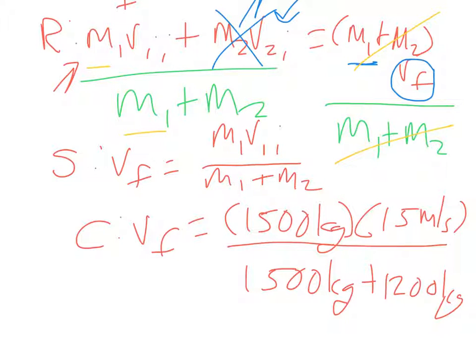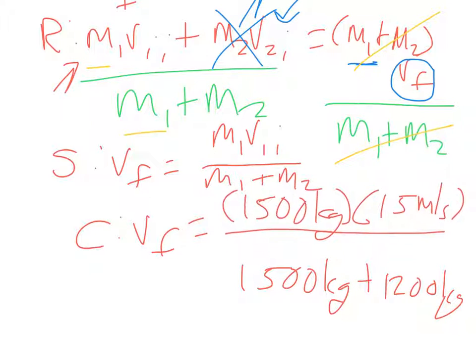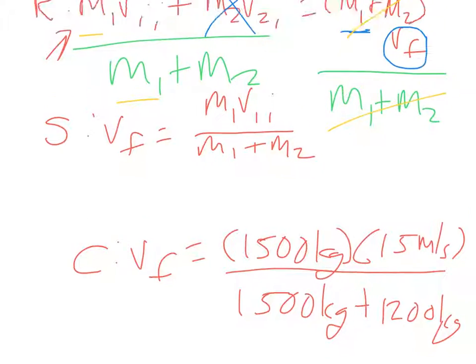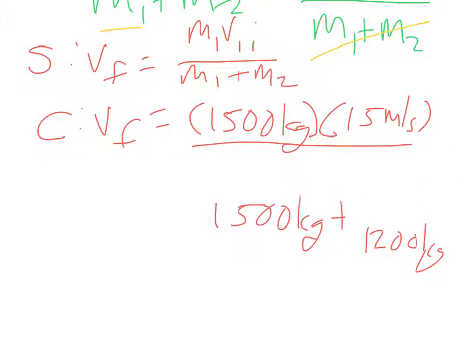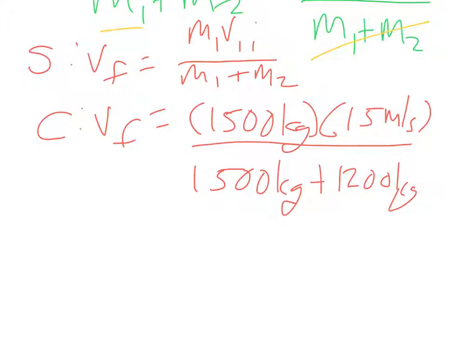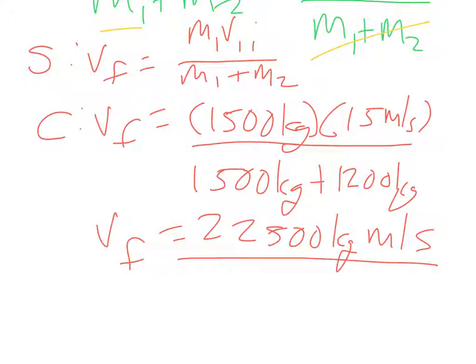So then I've got to do the rest of my math. And so we see that VF is equal to, I pull on my calculator, 1,500 times 15, the number is 22,500. So 22,500 kilograms meters per second, nothing cancels. And then divided by 1,500 plus 1,200, so that is 2,700 kilograms.